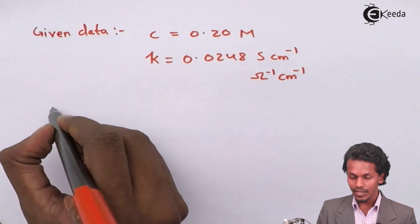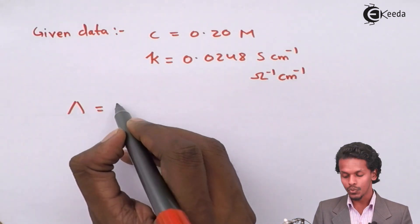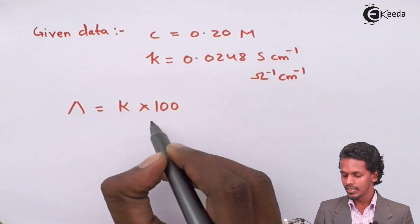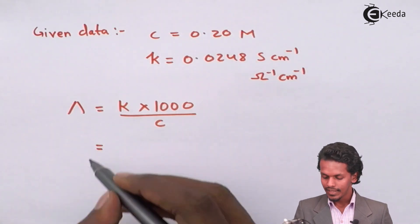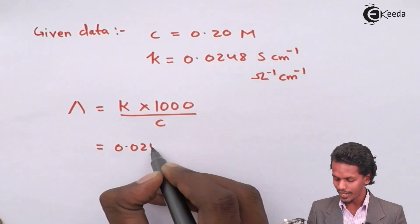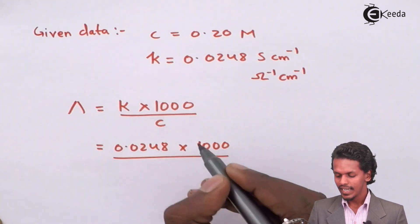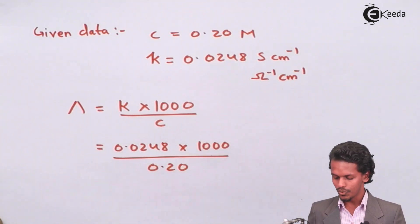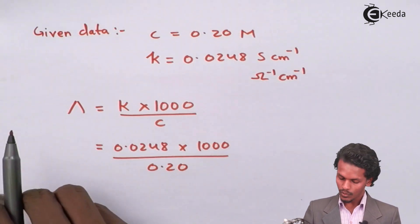Now we have the formula that capital lambda equals K times 1000 divided by C. For this instance, the value of K is 0.0248 times 1000 divided by C, which in this case is 0.20. So if we calculate this, we get the result.